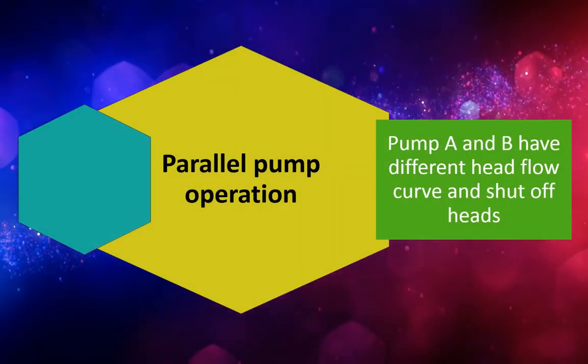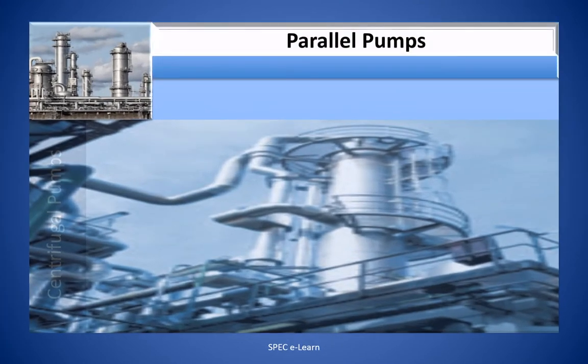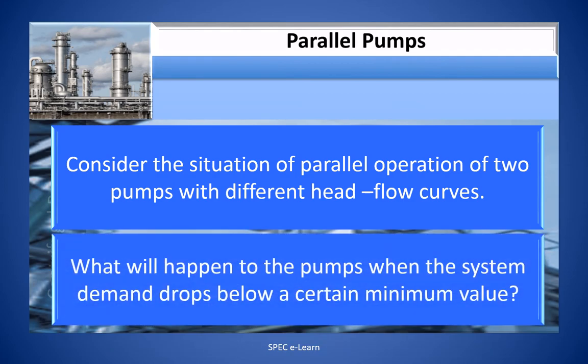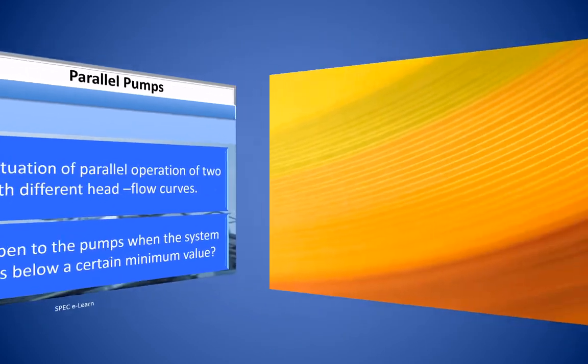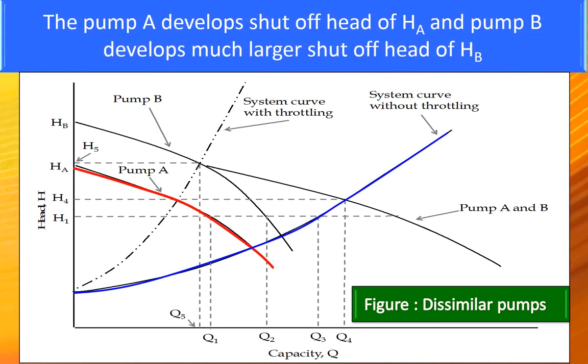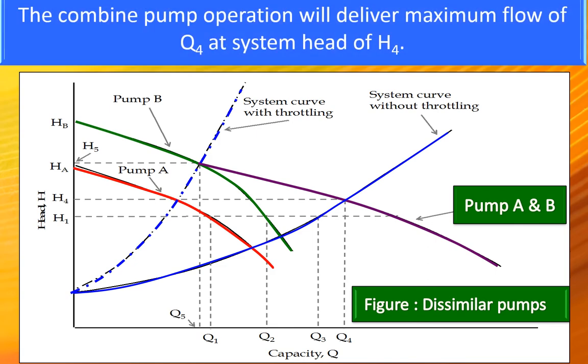Parallel pump operation: pump A and B have different head flow curve and shut-off heads. Consider the situation of parallel operation of two pumps with different head flow curves. What will happen to the pumps when the system demand drops below a certain minimum value? This figure depicts individual head flow curve of two dissimilar pumps and the combined curve for the parallel system. The pump A develops shut-off head HA and pump B develops much larger shut-off head HB. These two pumps operating in the system against the head of H1 will deliver flows Q1 and Q2 respectively, meeting the total system flow demand of Q3.